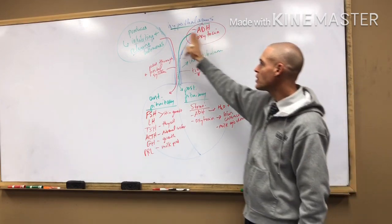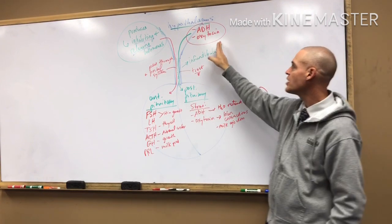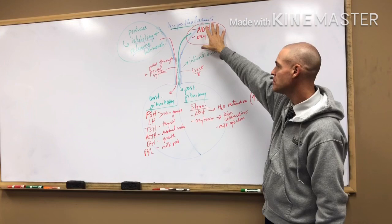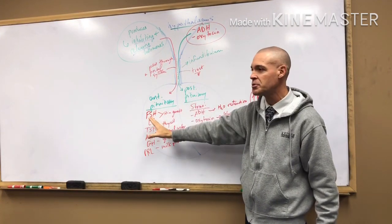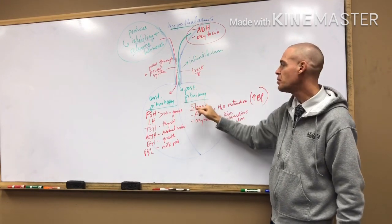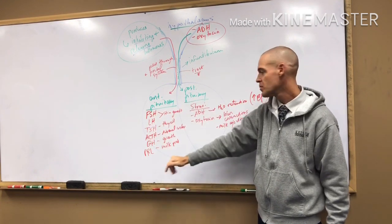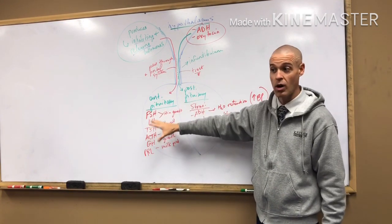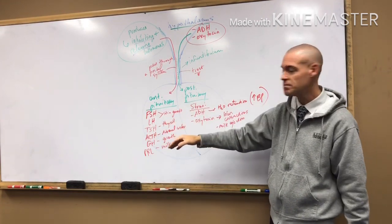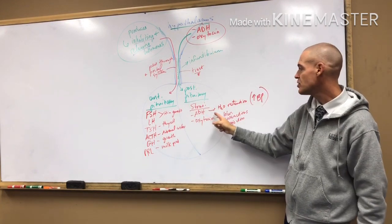So that's the relationship between the hypothalamus and the pituitary. Quick review: a total of eight hormones are made by the hypothalamus. Six go through the portal system to the anterior pituitary; the other two go through the tract to the posterior pituitary. The anterior pituitary makes six hormones of its own. The posterior pituitary makes none but stores two — ADH and oxytocin — and there are your functions.